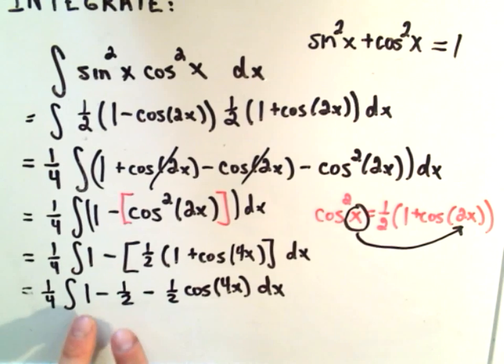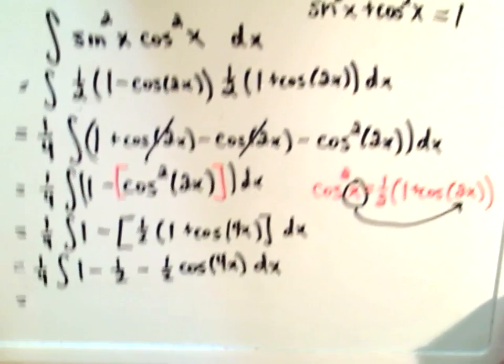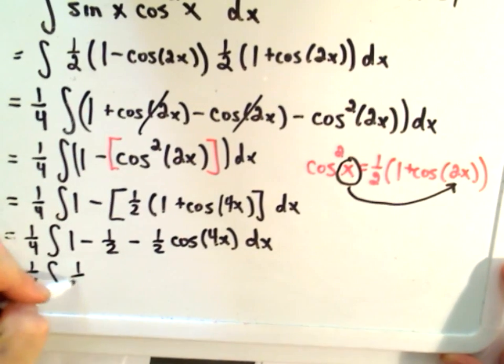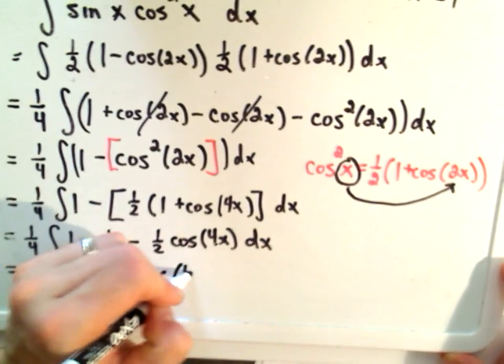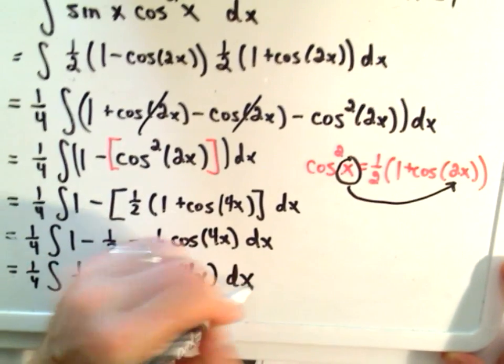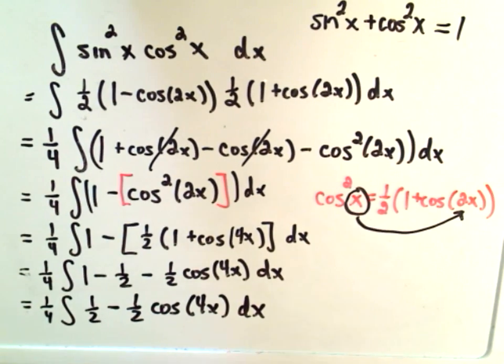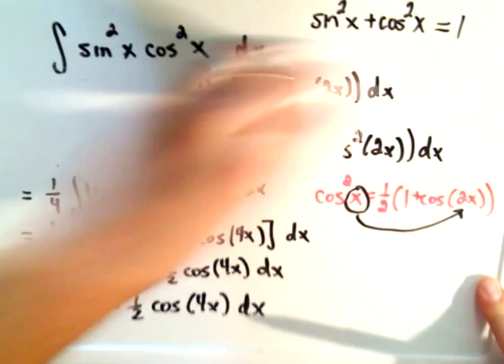The one minus the one-half will cancel, leaving us with one-fourth out front, one-half minus one-half cosine of 4x dx. I'm running out of room, so I'll put this back on the top.